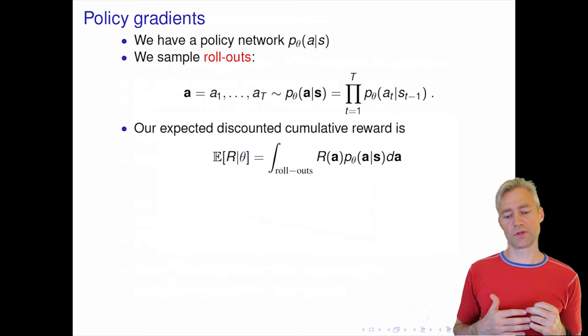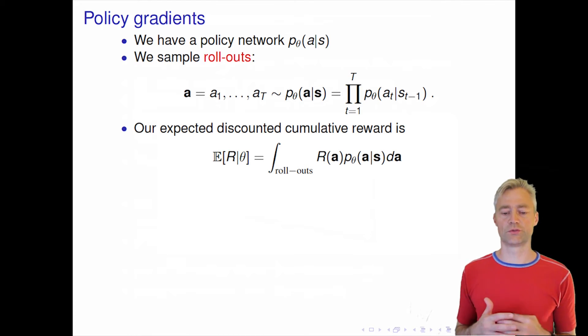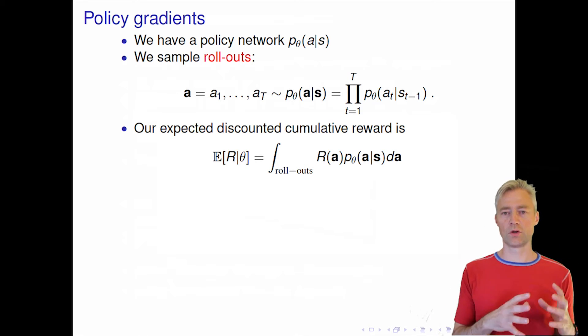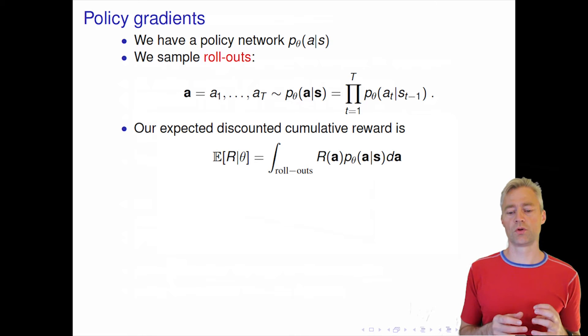And we can do that many times and then we can get an estimate of the expected cumulative reward, which formally is an integral or an average of the cumulative reward over all possible ways to take actions according to our policy network.